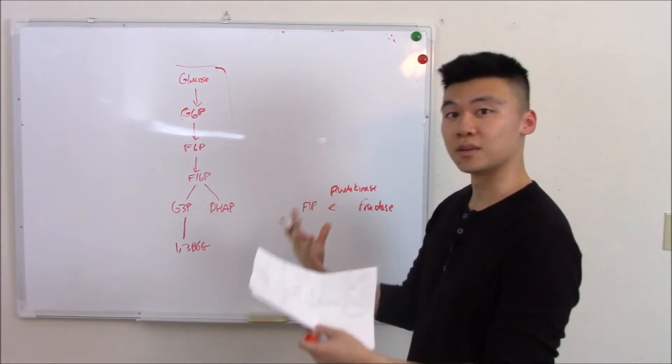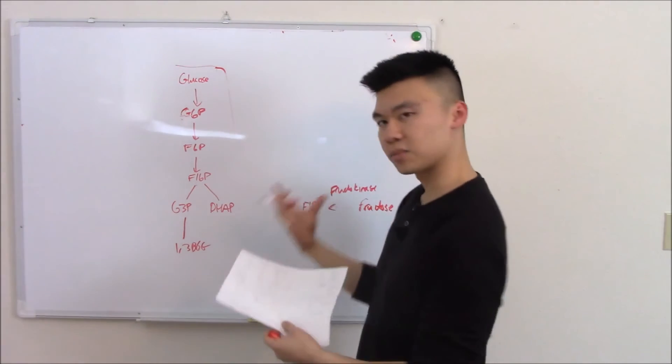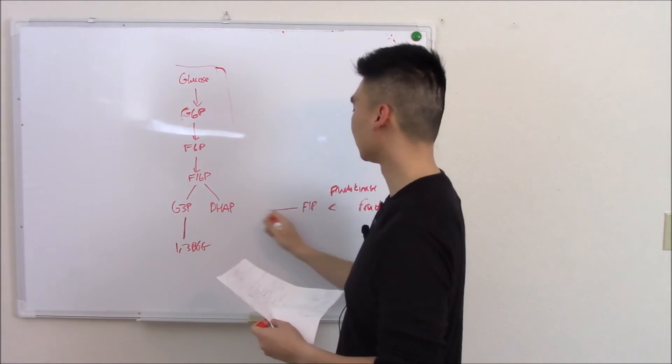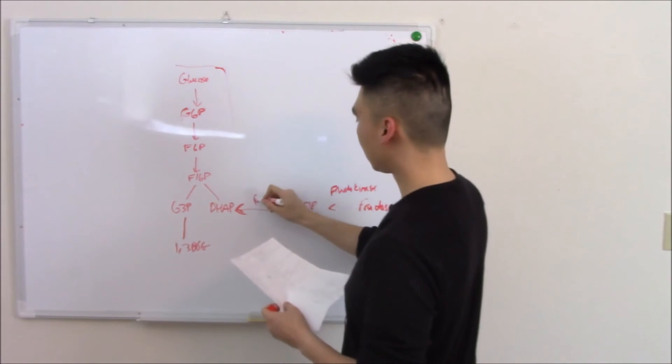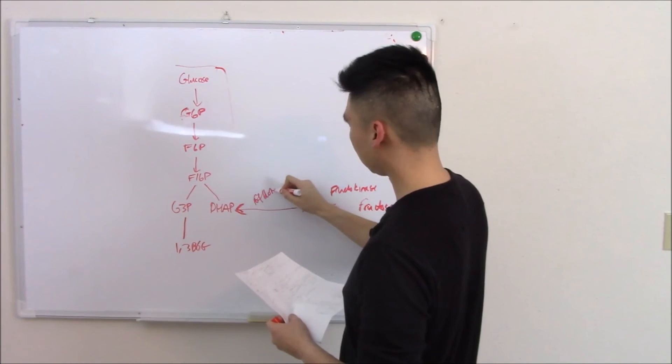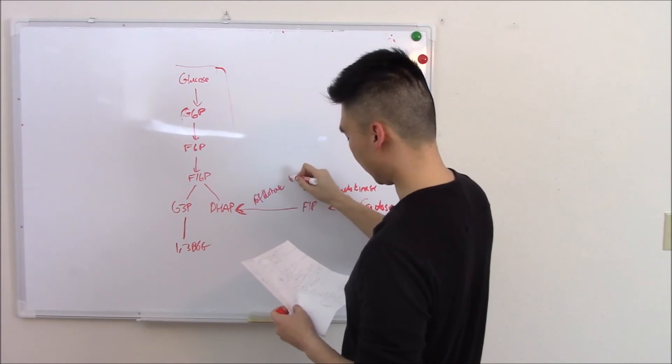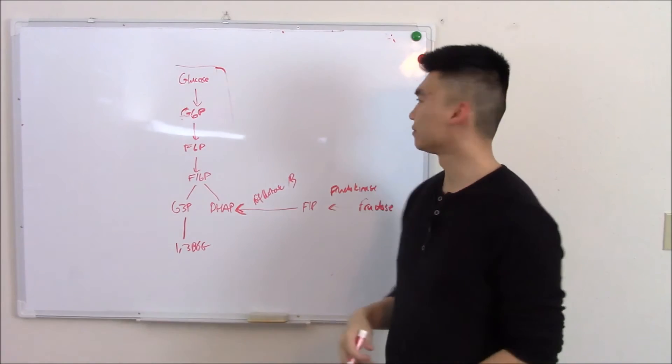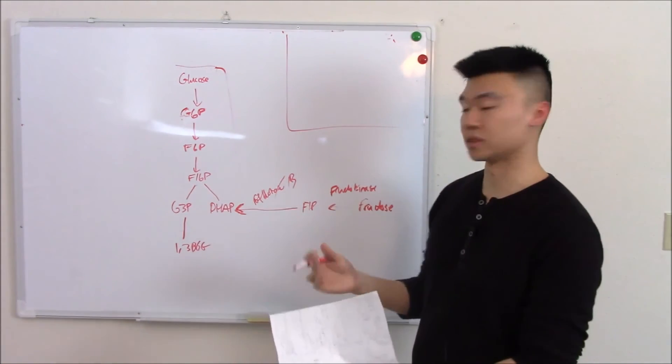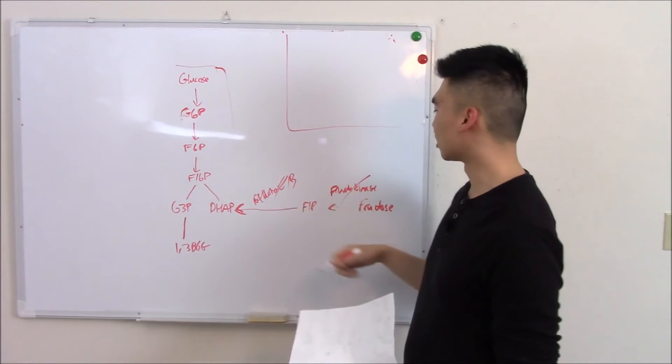That traps it, stops it from leaving. That goes to DHAP, enters the cycle that way via aldolase B. That's it. So what can go wrong? You tell me. There's only two enzymes. This can go wrong and this can go wrong.